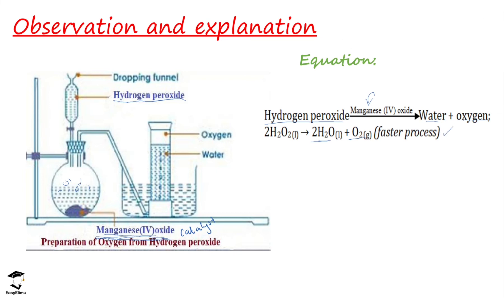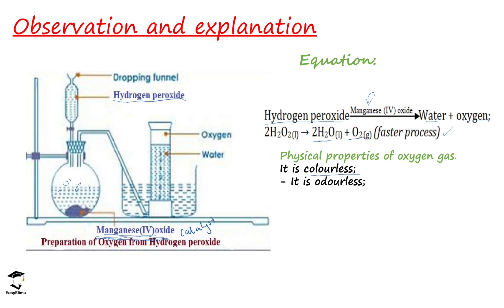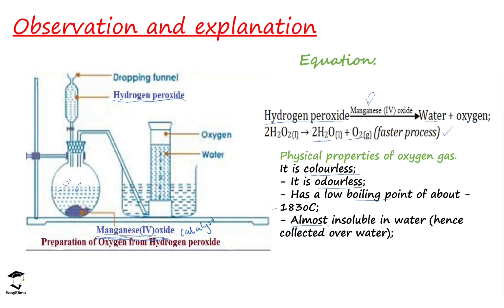Some physical properties of the oxygen collected by this method: oxygen is colorless — you cannot see it — and it is also odorless — you cannot smell it. It has a very low boiling point of negative 183 degrees Celsius, which we mentioned when discussing fractional distillation of air. Oxygen is almost insoluble in water — we say it is slightly soluble — and that is why it is collected by the over-water method.